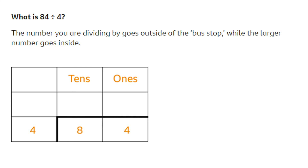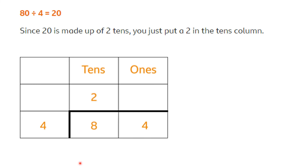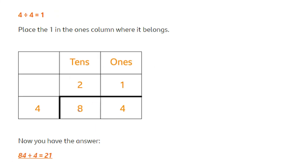Let's look at dividing. When we're dividing, we're going to use the bus stop method. The number that you are dividing by goes outside of the bus stop, whilst the larger number goes inside. Here we have 84 and I'm dividing by 4. I look at my tens column — how many groups of four can I get into eight? I can get two, so I place two above. Then I look at my units column — how many groups of four can I get into four? That's one group, placed above as well. So 84 divided by 4 gives me 21.